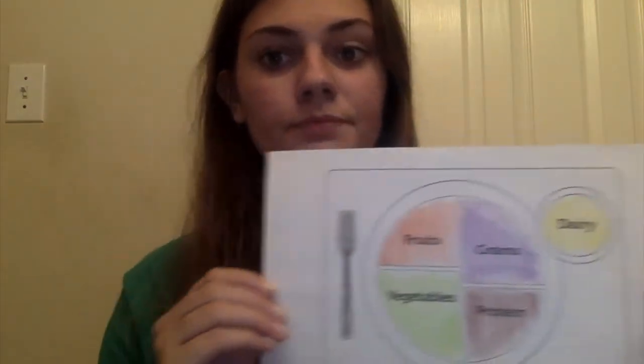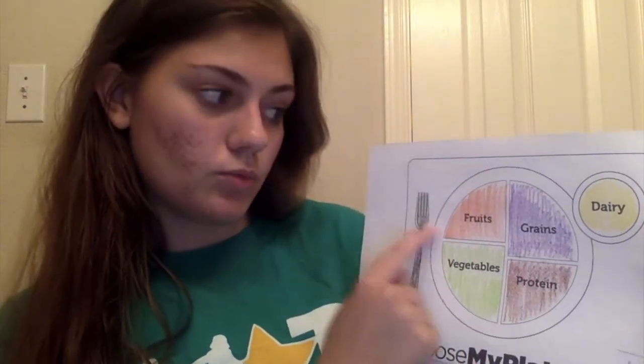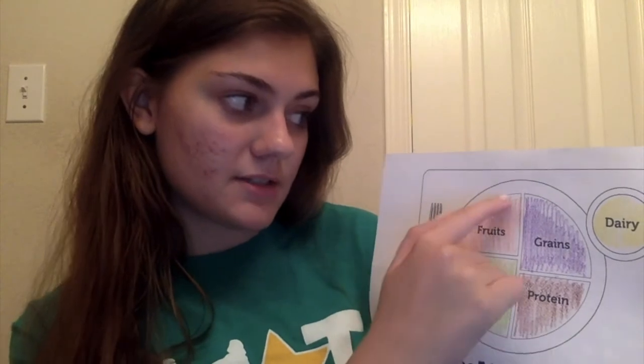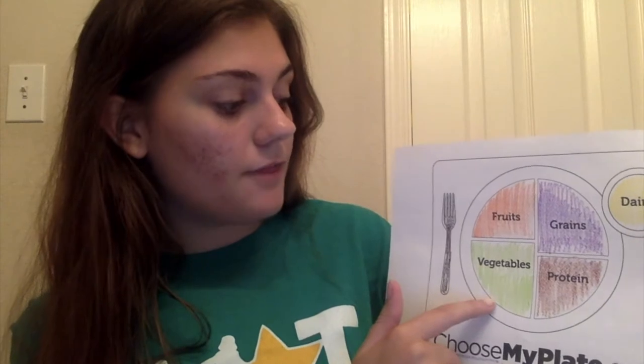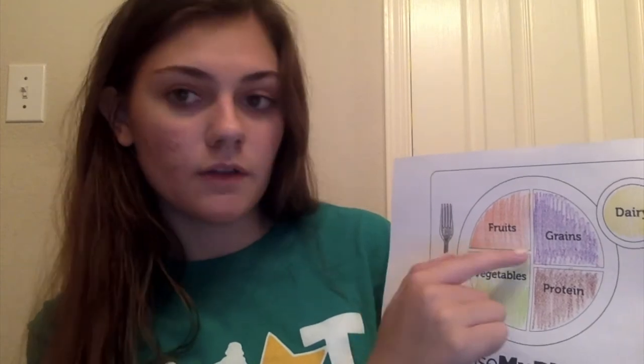So first we're going to learn about the food groups and how the plate is divided. We have a little less than one fourth of the plate with fruits, so when you're making your plate for all three meals throughout the day, you want a little less than a fourth filled with fruits. Vegetables are on the same half as the fruits and take up a little bit more than a fourth.